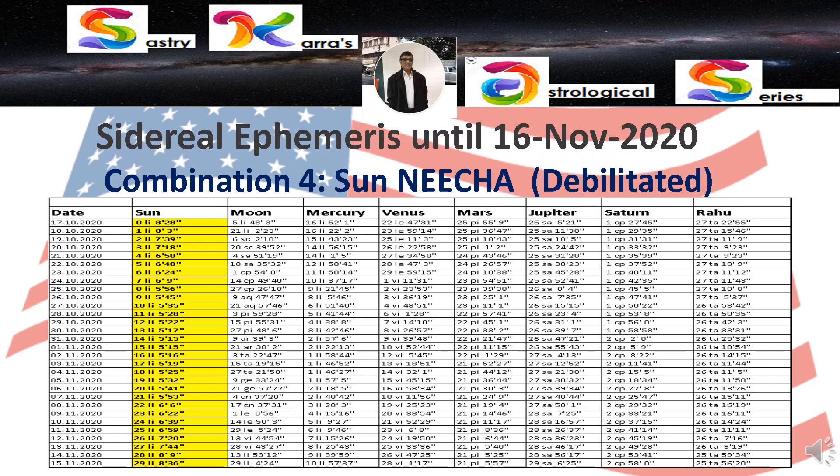This is the most important period I want to do transit analysis on for any country, because Sun, the leader, is naturally debilitated when in Libra — meaning the leader becomes weak in the transit positions. When you superimpose those transit planets onto the country's chart, I will analyze what the impact is and what type of events are possible. Sun enters Libra somewhere around October 17th and stays all the way till 16th November 2020.